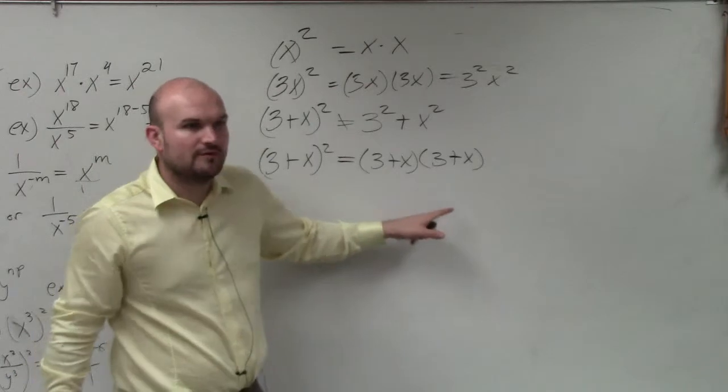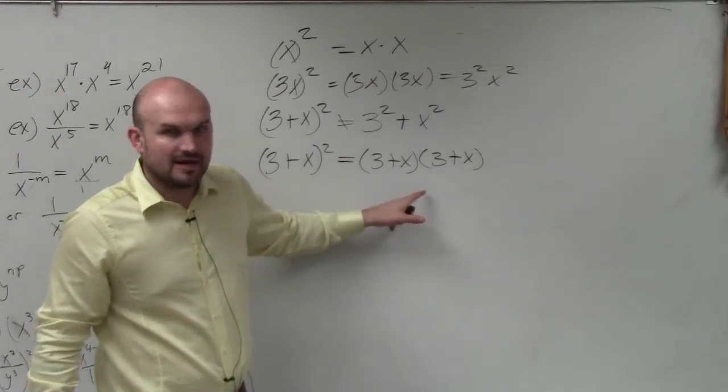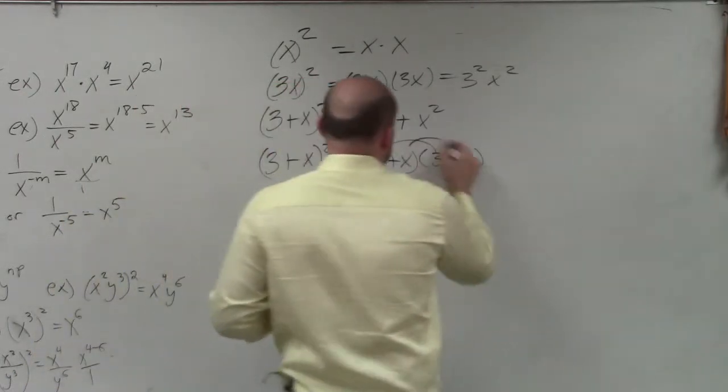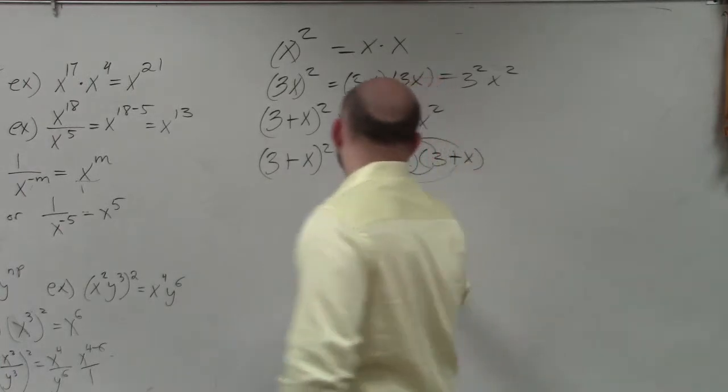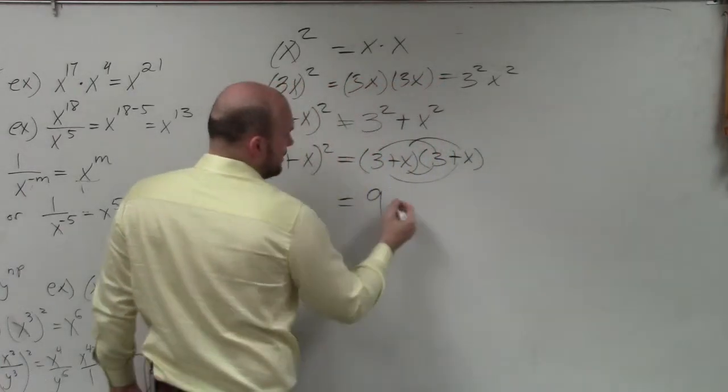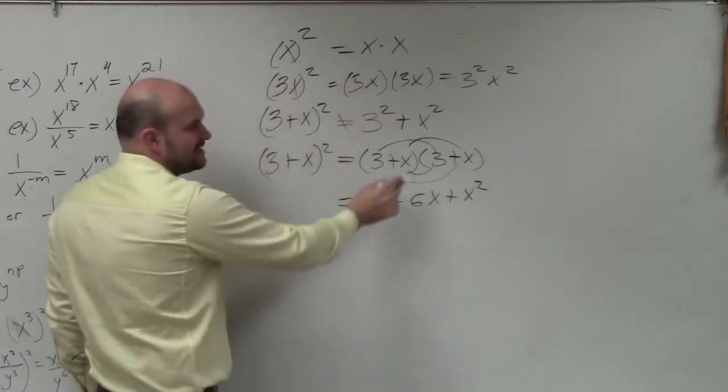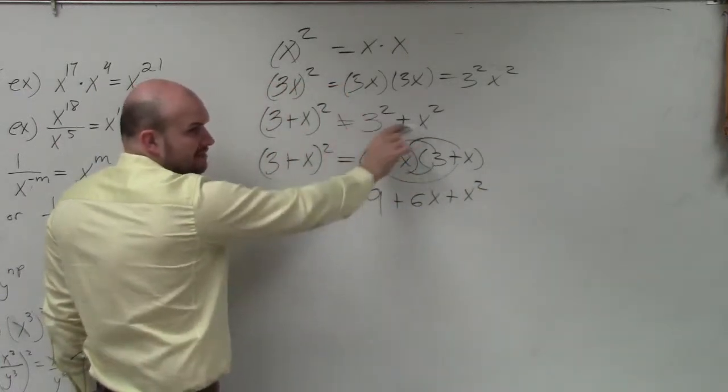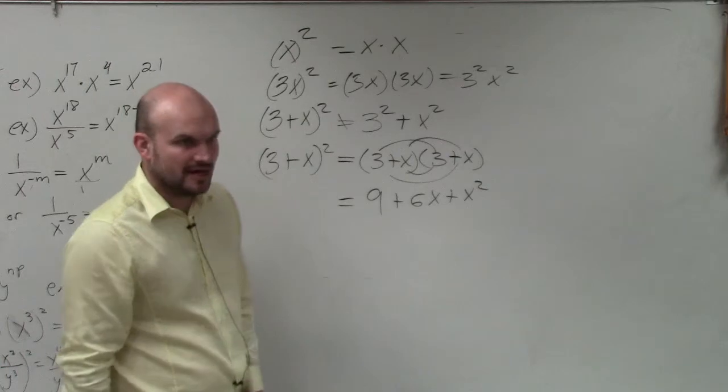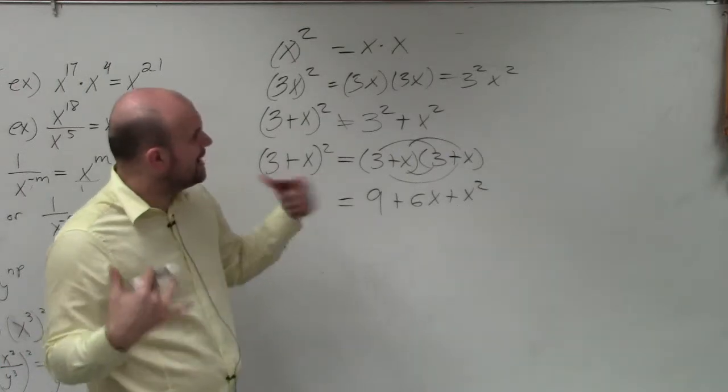Now, you guys hopefully remember how to multiply this, right? We did this in class. So you can use FOIL. You can use the box method. And what you get is 9 plus 6x plus x squared, which is definitely not 9 plus x squared, right? So please do not make that mistake.